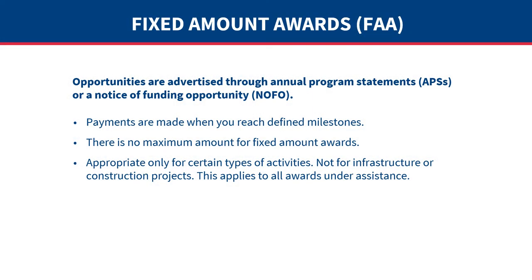The first type of grant you can apply for with USAID is a fixed amount award, or FAA. These opportunities are advertised through Annual Program Statements or a Notice of Funding Opportunity, or NOFO. The application process for a fixed amount award is often streamlined to require only an initial concept paper. With this type of grant, payments are made when you reach defined milestones as outlined in the grant document — payments are based on outputs rather than inputs such as costs. USAID makes a determination about using fixed amount awards based on the type of organizations expected to apply.